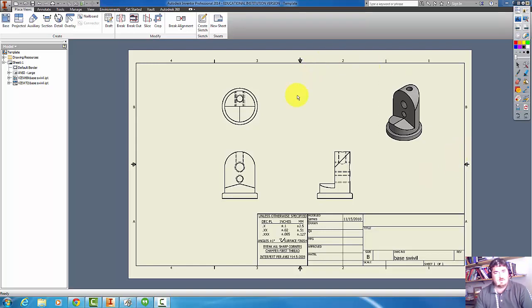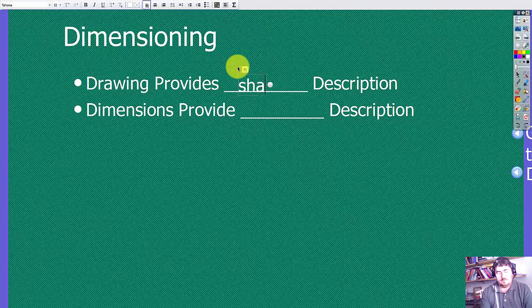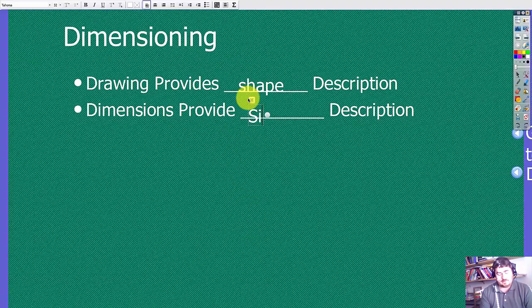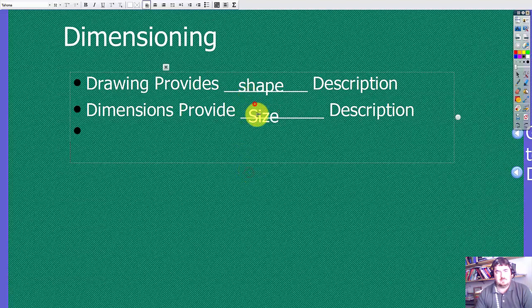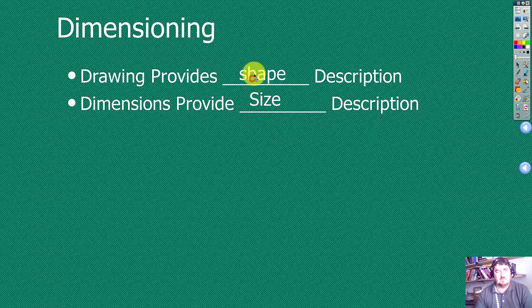Now we've got this drawing created, but what's the next step? You can't really send this to a shop to have this part made. The drawing provides the shape description of the part, but when we add dimensions to it, that'll add the size description. So drawing for the shape, dimension for the size.